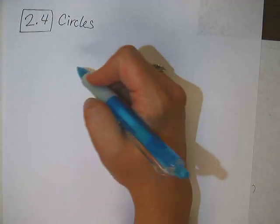Okay, we're going to do a brief overview of circles. The equation for a circle comes from Pythagorean Theorem. Let's see how that works.